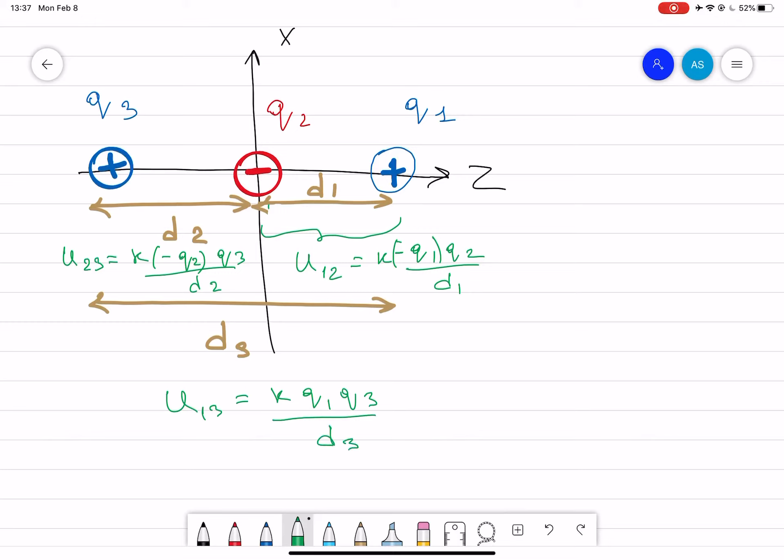The total potential energy due to all the system will be the summation of those energies: u12 plus u23 plus u13. I think that's it.